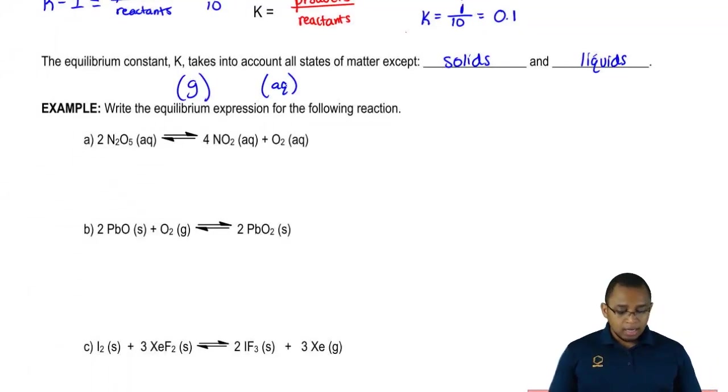Now knowing this, let's take a look at the following example. It says, write the equilibrium expression for the following reaction. Here, we have 2N2O5 aqueous gives us 4NO2 aqueous plus O2 aqueous.